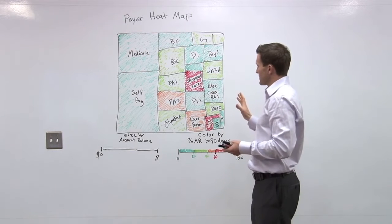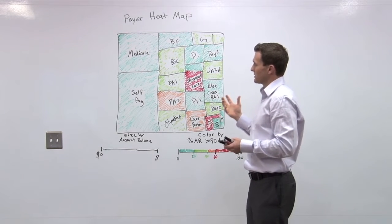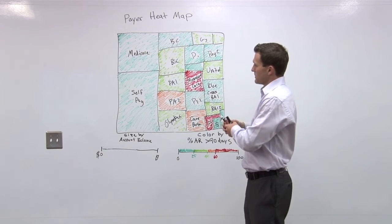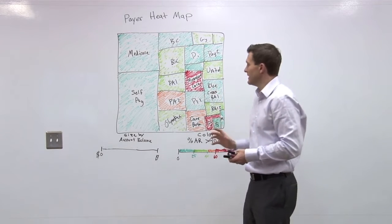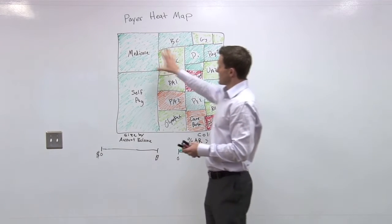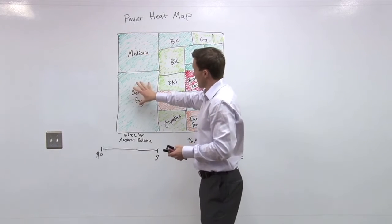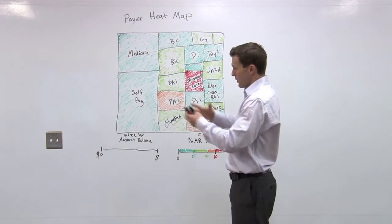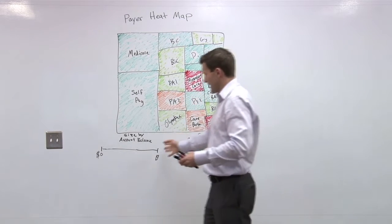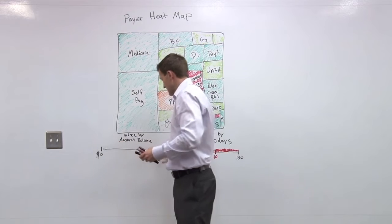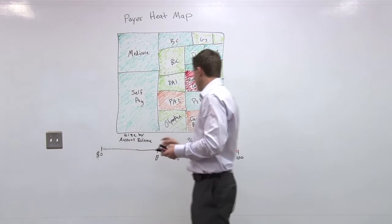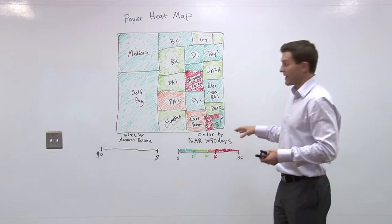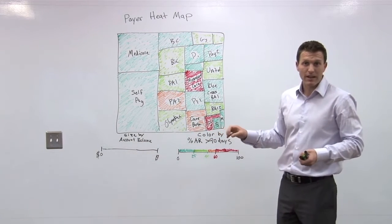How this visualization works is it's really meant to first of all give you a relative size of each bucket. The size of the square represents the size of the total AR, or count balance outstanding, as you can see by this legend here. And then the colors represent the percentage of their AR that's greater than 90 days.